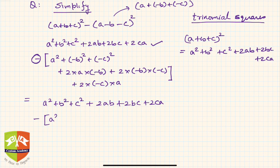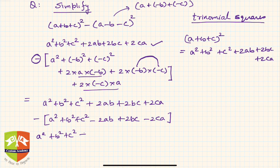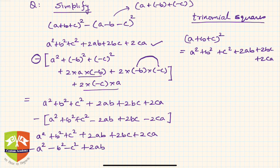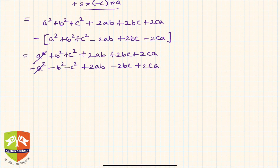Now opening all brackets: a² + b² + c² + 2ab + 2bc + 2ca minus (a² + b² + c² − 2ab + 2bc − 2ca). This gives a² + b² + c² + 2ab + 2bc + 2ca − a² − b² − c² + 2ab − 2bc + 2ca. The a², b², and c² terms cancel, leaving the final answer: 4ab + 4ca.